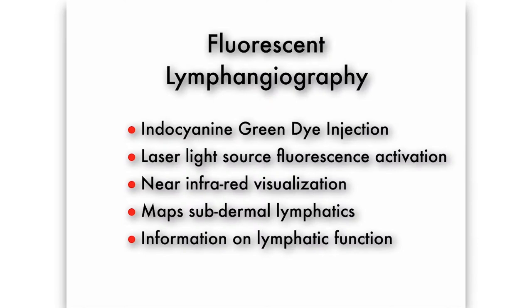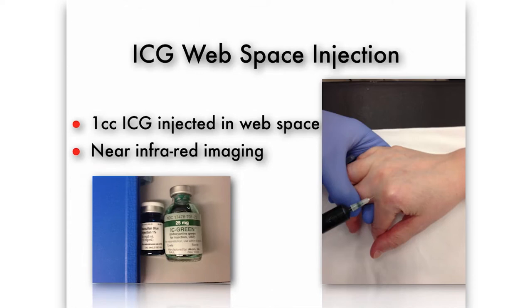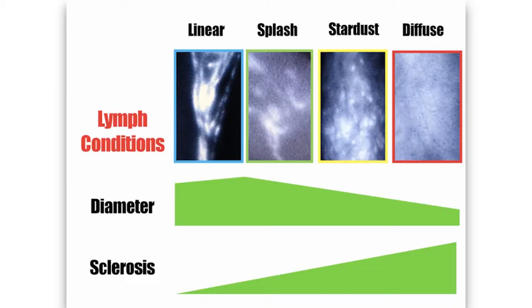Fluorescent lymphangiography is very, very useful. It involves the injection of indocyanine green, which is a fluorescent dye. The fluorescence is excited by a laser light source, and then you can pick it up with a near-infrared camera. There are several systems available on the market. This maps the subdermal lymphatics and gives you information on lymphatic function. The injection is into the web spaces and can be done in clinic or in the operating room. You can tell a lot from the pattern that you see. There are different patterns: the linear pattern, seen in normal people and early lymphedema, progressing to a splash pattern, a stardust pattern, and a diffuse pattern — these indicate the severity of lymphedema.